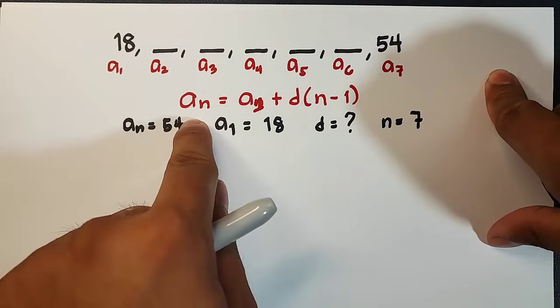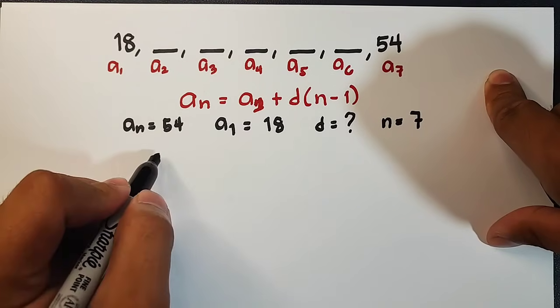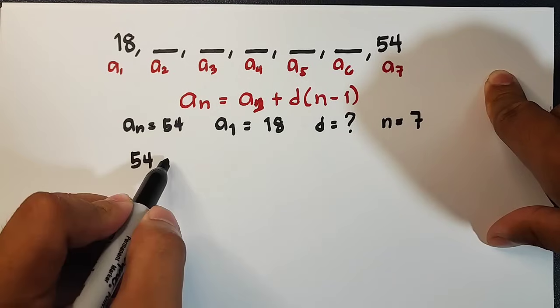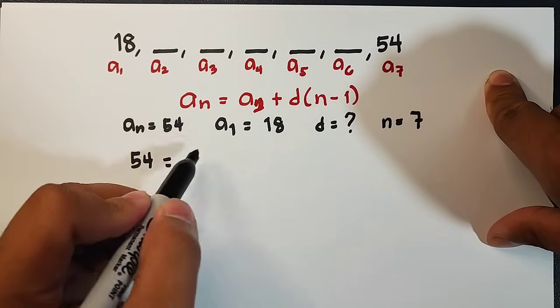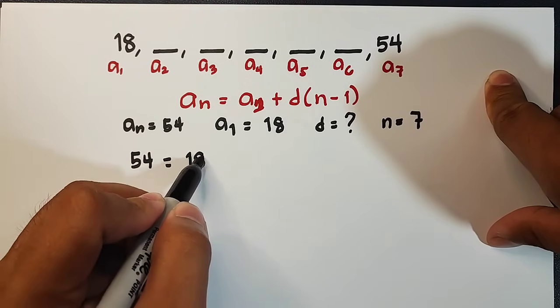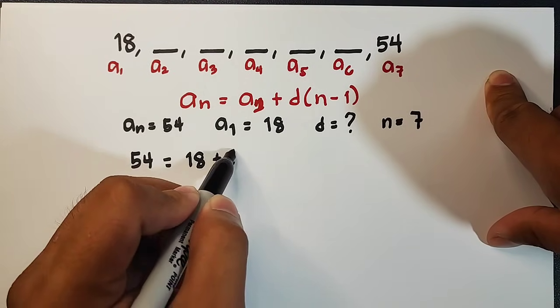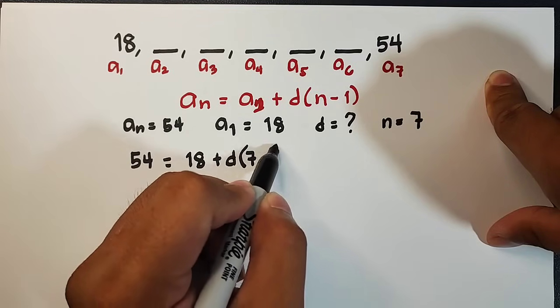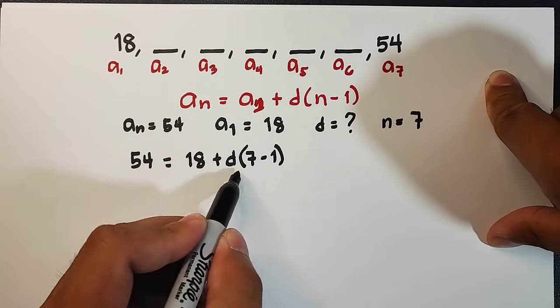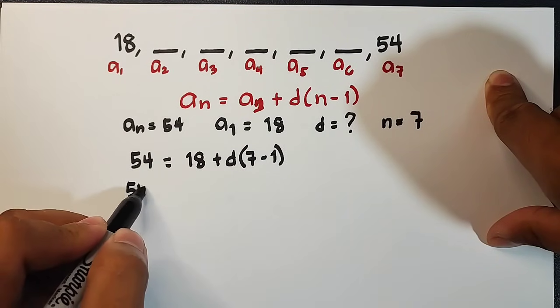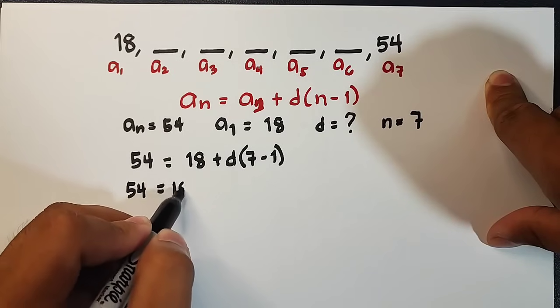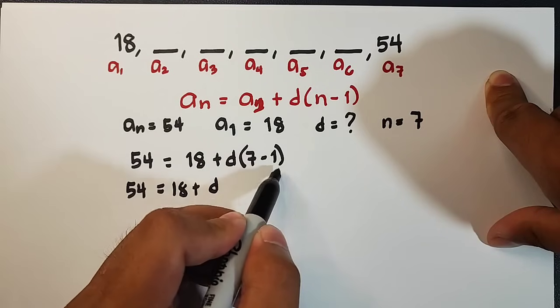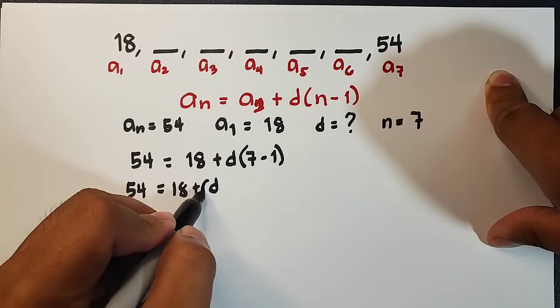So let us use this formula. a sub n is equal to 54. So we have now 54 is equal to your a sub 1, which is 18, plus d, times your n, which is 7, minus 1. Simplify this part. We have 54 is equal to 18, plus d, and then 7 minus 1 is 6, therefore this is 6d.